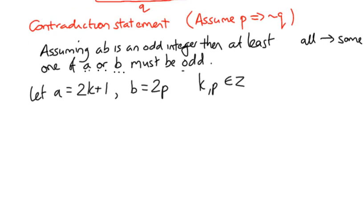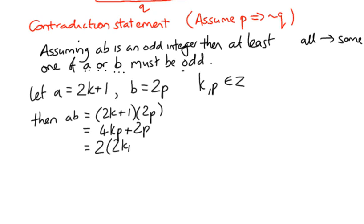So we're then saying, well, what does that mean about AB? Then A times B is going to be 2K plus 1 multiplied by 2P, which multiplies out to give you 4KP plus 2P. Now I can take a common factor of 2 to leave us with 2(2KP + P).